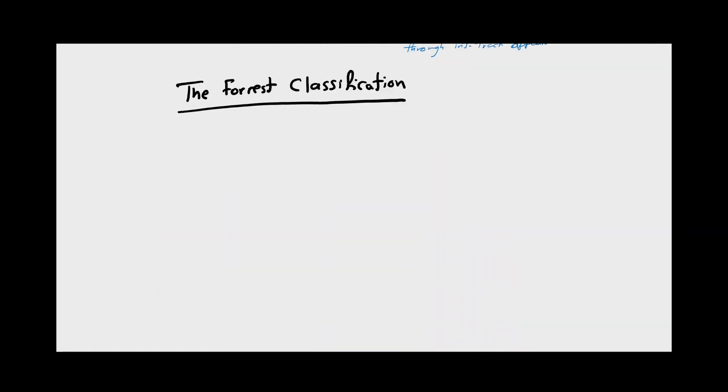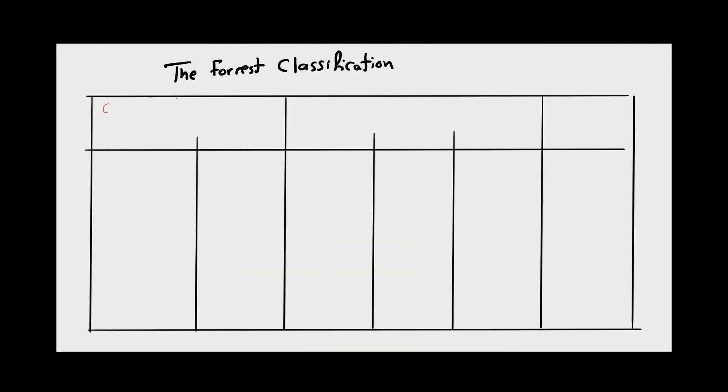Now let's talk about the management. An uncomplicated peptic ulcer is usually managed with proton pump inhibitors and Helicobacter pylori eradication if present. But a patient with a bleeding peptic ulcer must be resuscitated in the first place with fluid therapy and close monitoring of vital signs. After hemodynamic stability is reached, upper GI endoscopy is the gold standard, as it is considered to be a diagnostic and therapeutic maneuver. Forrest classification is considered to be one of the widely used classifications or scales to describe the endoscopic findings in cases of gastrointestinal bleeding.